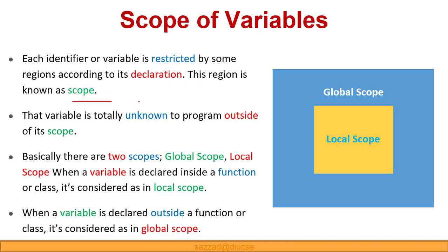Depending on the declaration, the region is defined. A variable is totally unknown to a program outside its scope. For example, if we declare a variable as local, it is actually unknown to other functions. Basically there are two scopes: global scope and local scope. When a variable is declared inside a function or class, it is considered as a local variable.